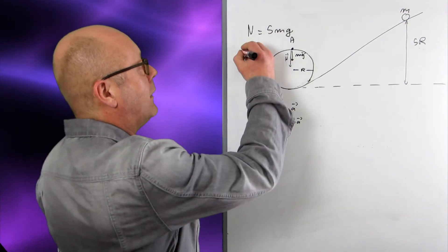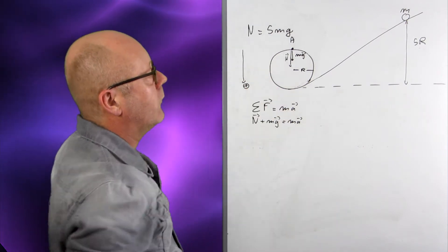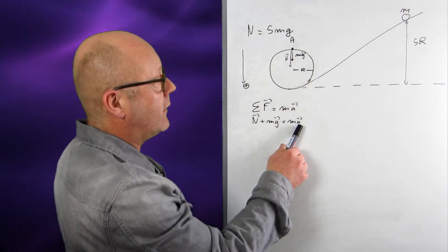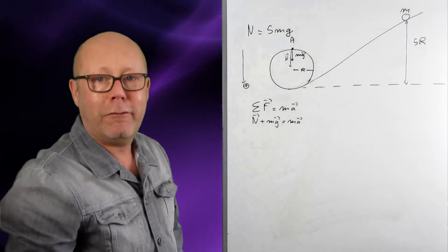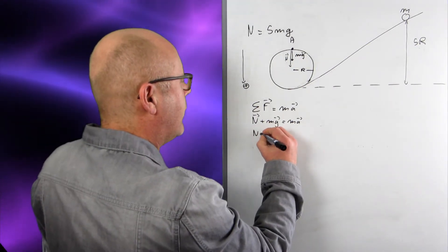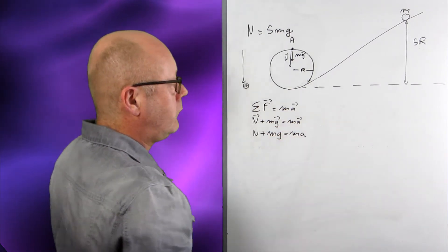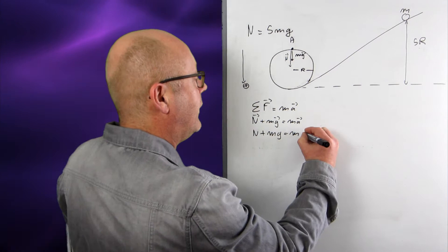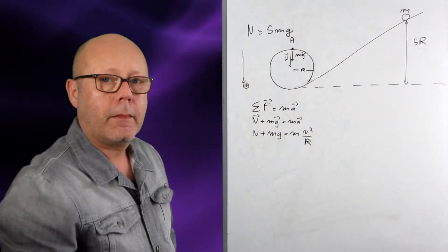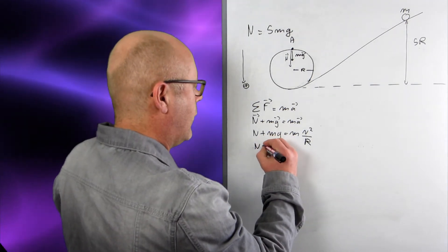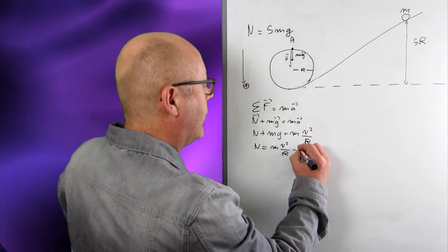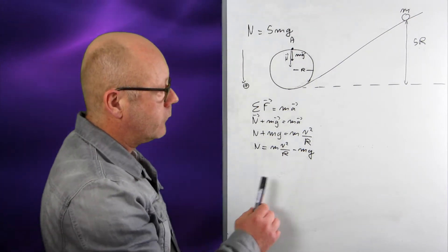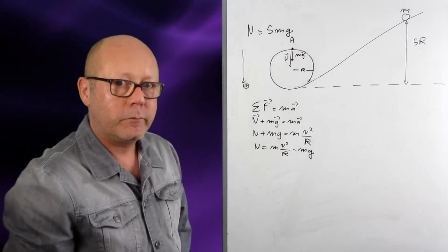To get rid of the vector arrows I define a positive direction. I notice that all my forces are downwards, so downward is positive. The acceleration is also towards the center of the circle — downwards — so I can write N + mg = ma. Since it's circular motion, I replace a with v²/r and express N as mv²/r minus mg. I know m, g, and r, but I don't know v.